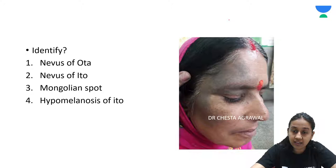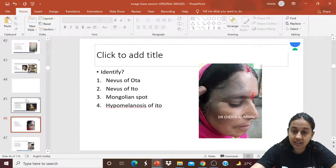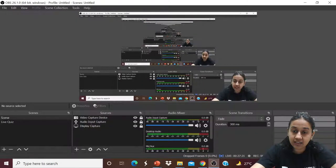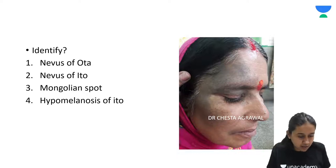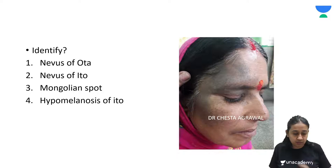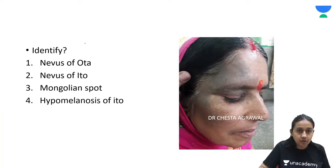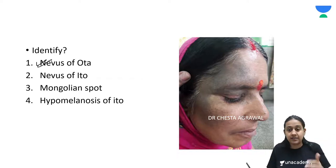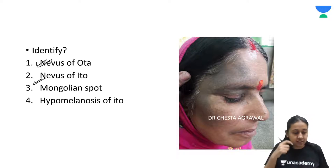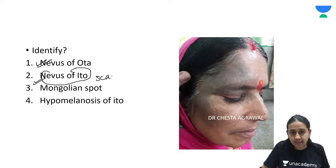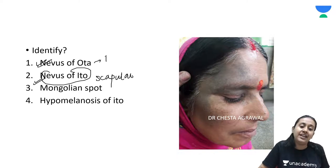Identify this condition: nevus of Ota, nevus of Ito, or Mongolian spot? If you see bluish pigmentation over the distribution of the trigeminal nerve — over the face — this is known as nevus of Ota. If the same bluish discoloration is present over the scapular area, this is known as nevus of Ito. Please remember: nevus of Ito is over the scapular area, and nevus of Ota is over the distribution of the trigeminal nerve on the face.